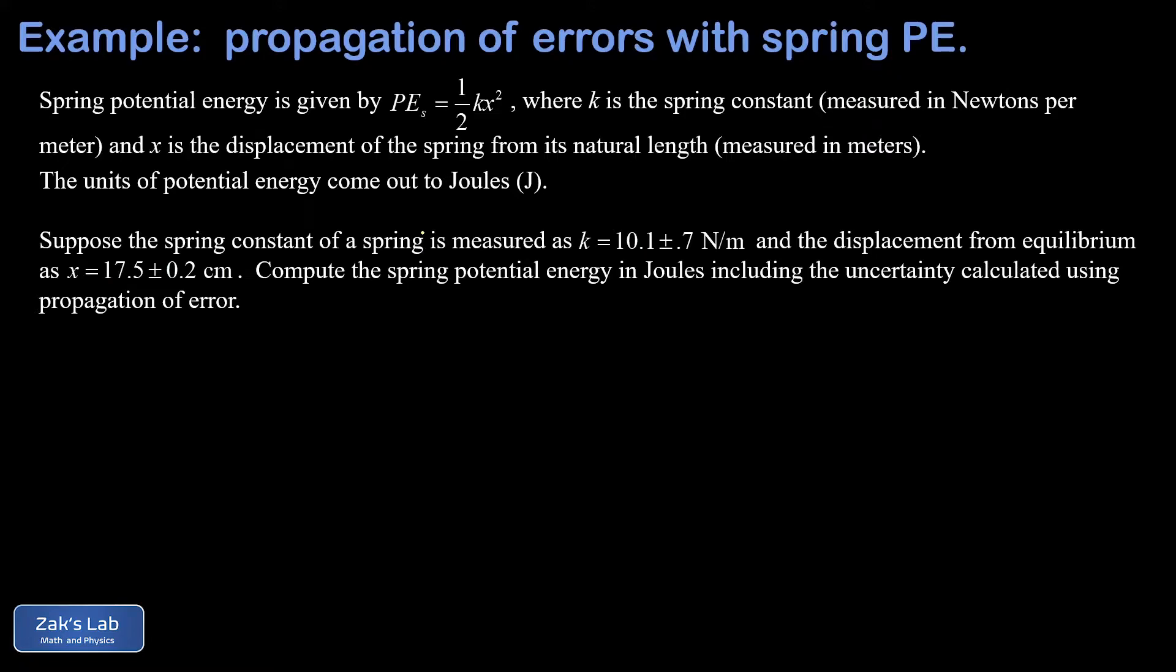We're told that potential energy for a spring is one half kx squared, where k is the spring constant and x is the displacement of the spring from its natural length. The units come out to joules if we measure the spring constant in newtons per meter and the displacement in meters. That's a key point for this problem because we're actually given the displacement x in centimeters and that has to be converted immediately.